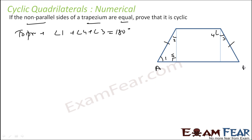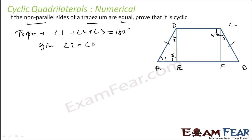Let us label the vertices A, B, C, D, E, and F. This angle plus this whole angle is equal to 180 degrees — that means it is cyclic. It is given that angle 2 is equal to angle 3, since the non-parallel sides are the same.